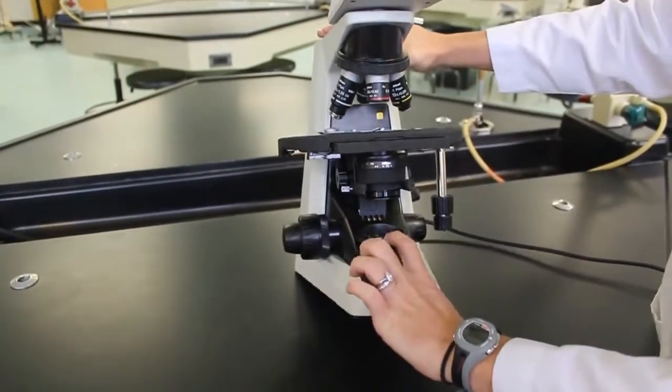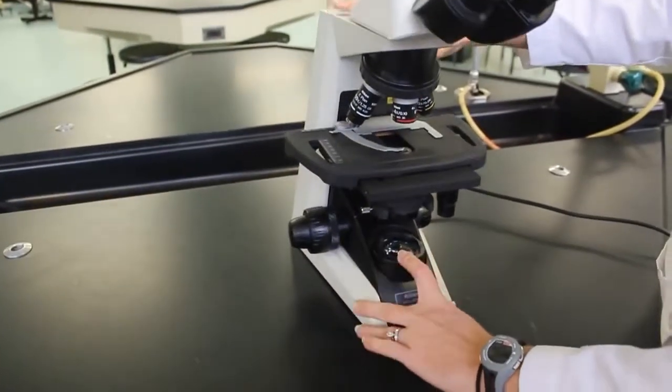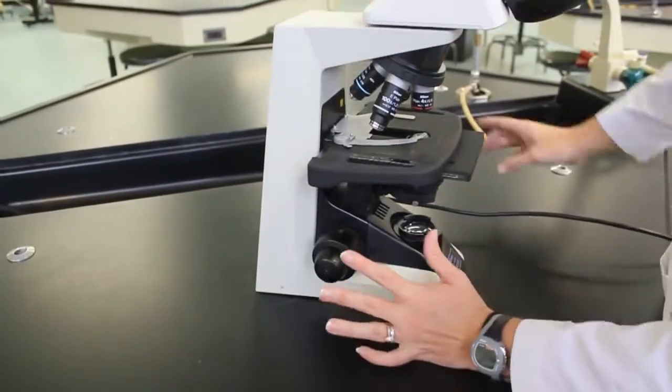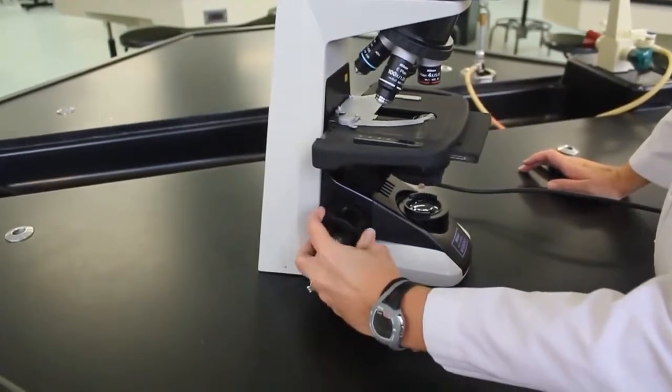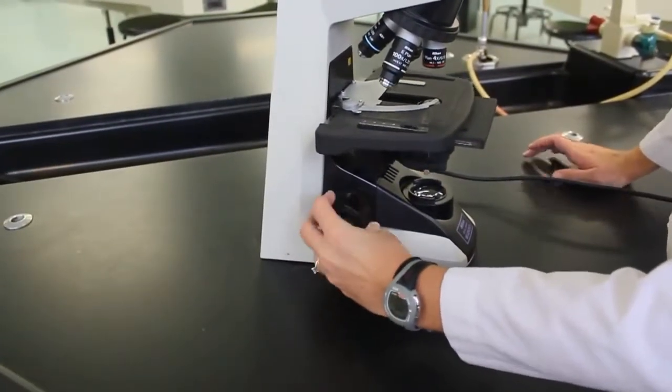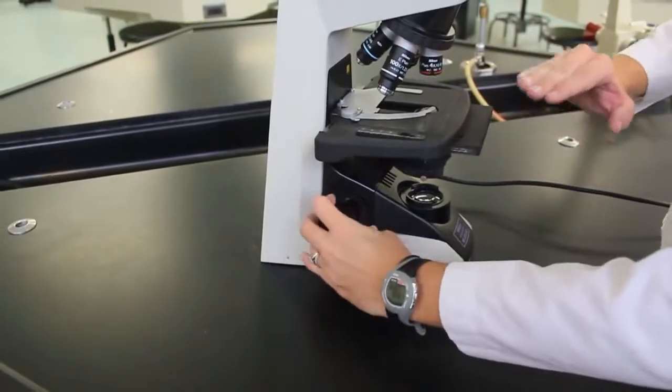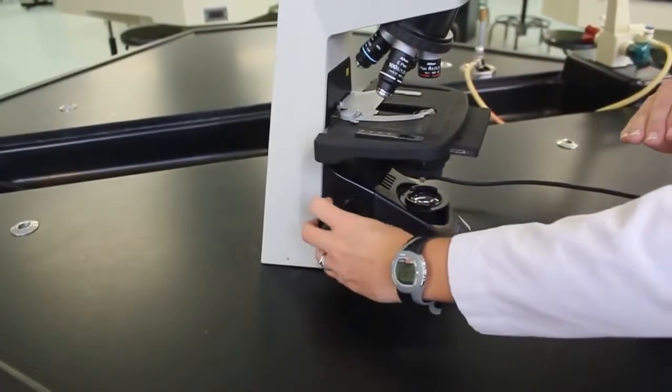Down at the bottom, this is the light source where the light comes from. These two knobs are your focus knobs. The large knob, as I turn it, moves the stage up and down so much that you can see it.